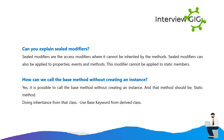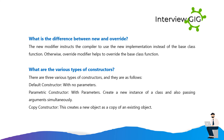How can we call the base method without creating an instance? Yes, it is possible to call the base method without creating an instance. That method should be a static method. Use inheritance from that class, and use the base keyword from the derived class. What is the difference between new and override? The new modifier instructs the compiler to use the new implementation instead of the base class function. Otherwise, the override modifier helps to override the base class function.